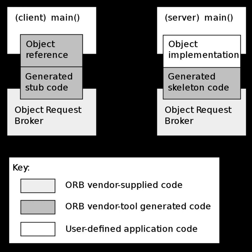Each standard CORBA exception includes a minor code to designate the subcategory of the exception. Minor exception codes are of type unsigned long and consist of a 20-bit Vendor Minor Codeset ID (VMCID), which occupies the high-order 20 bits, and the minor code proper which occupies the low-order 12 bits. Minor codes for standard exceptions are prefaced by the VMCID assigned to OMG, defined as the unsigned long constant CORBA::OMG_VMCID. Within a vendor-assigned space, the assignment of values to minor codes is left to the vendor.